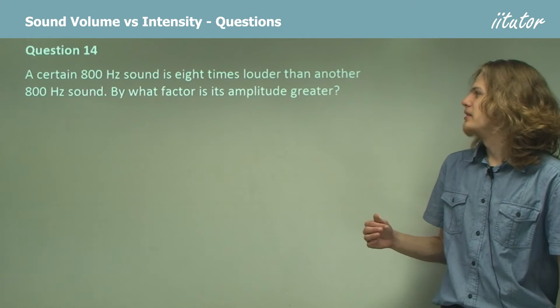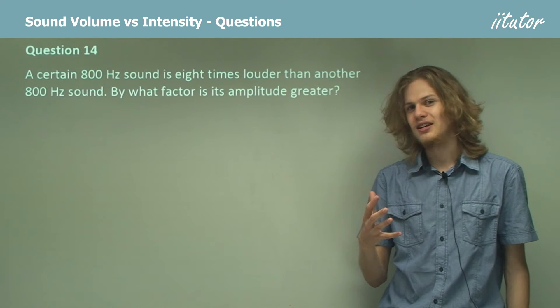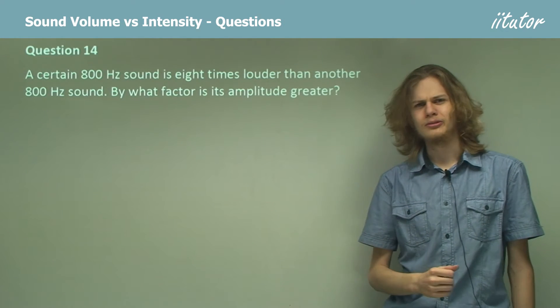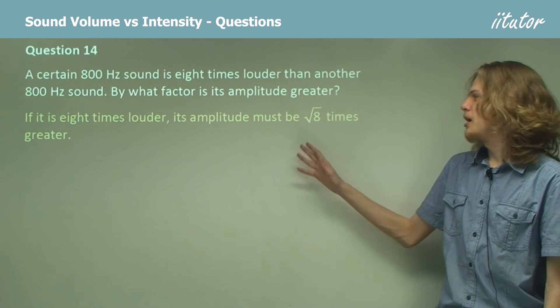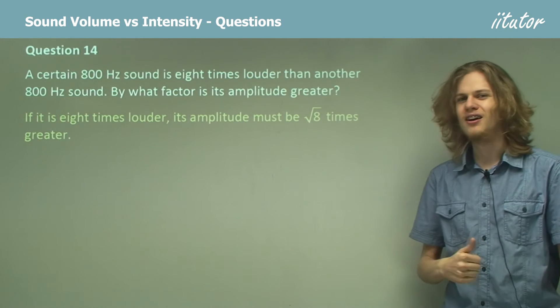So that means that if we square the change in amplitude here, we'll end up with 8. Well, 8 is not a square number. What's our answer? Well, if it's 8 times louder, then its amplitude is the square root of 8 times greater.